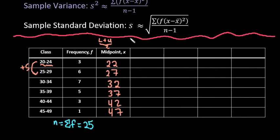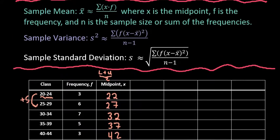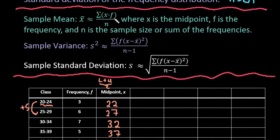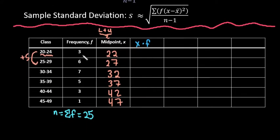Okay, so our next column, what we're going to do, again, we're trying to find the mean, and the mean is the sum of x times f divided by n. So I'm going to have to take the x column, the midpoint, and multiply it by f. So I would do 22 times 3, which is 66. 27 times 6 gives me 162. 32 times 7 is 224. 37 times 5 is 185. 42 times 3 is 126. And then 1 times 47 gives me 47.